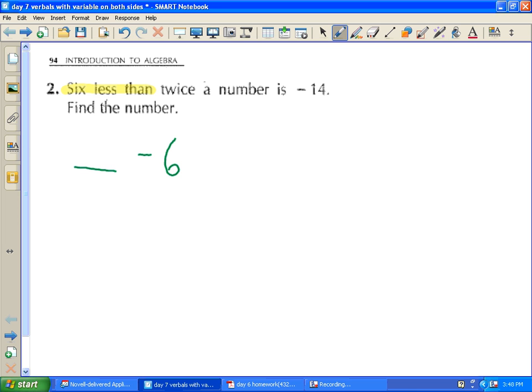I take a closer look at the question and it says twice a number. Whatever is after the six less than is what goes into this blank here. So it's going to be twice a number. I don't know what that number is so I can call it 2N. If I don't want 2N I can call it 2X. Whatever.